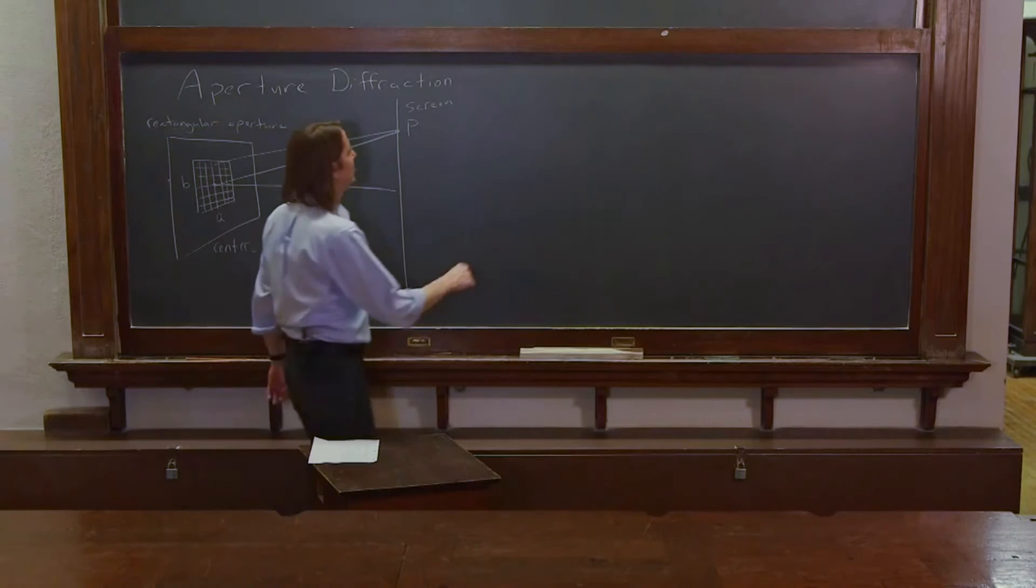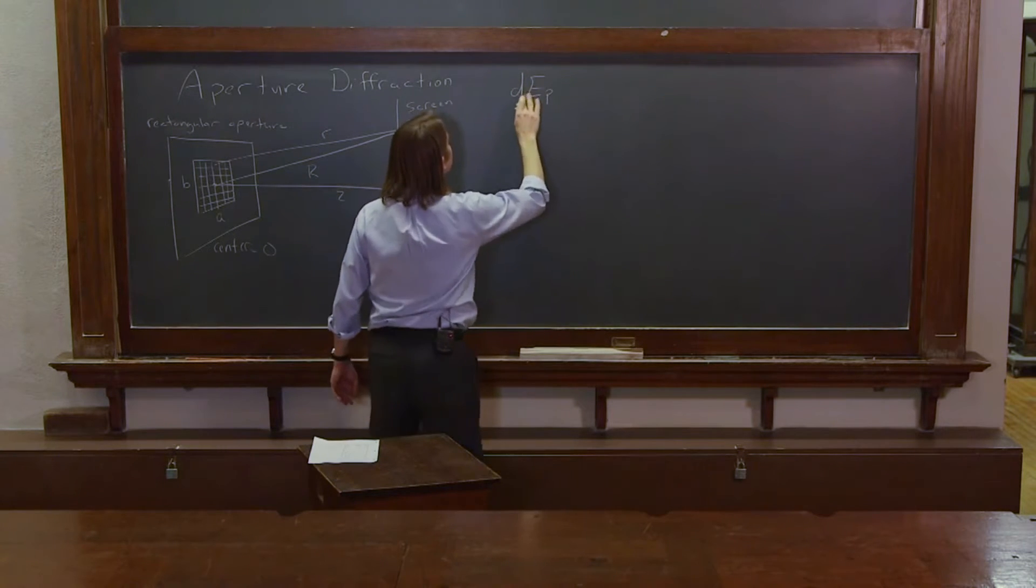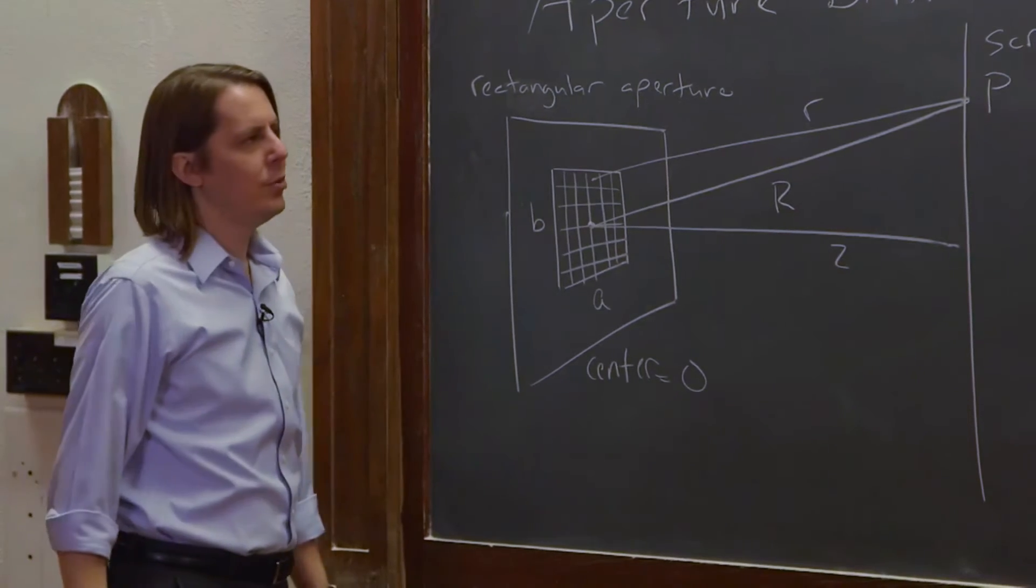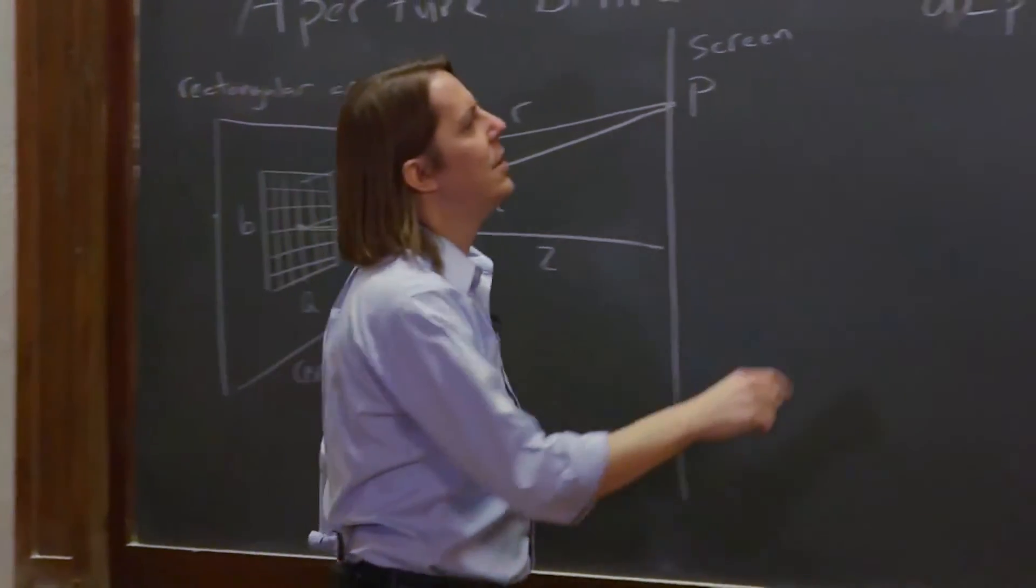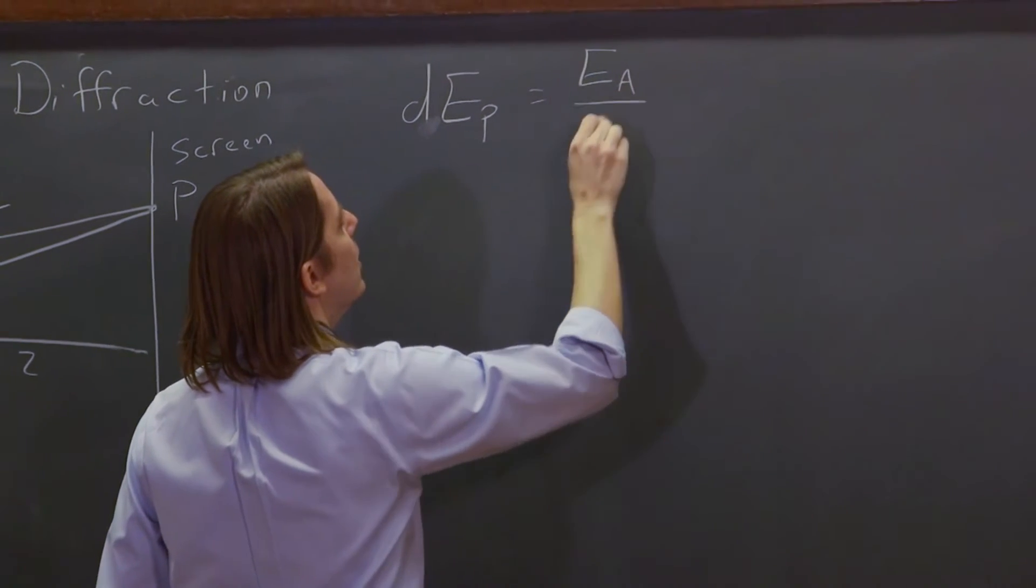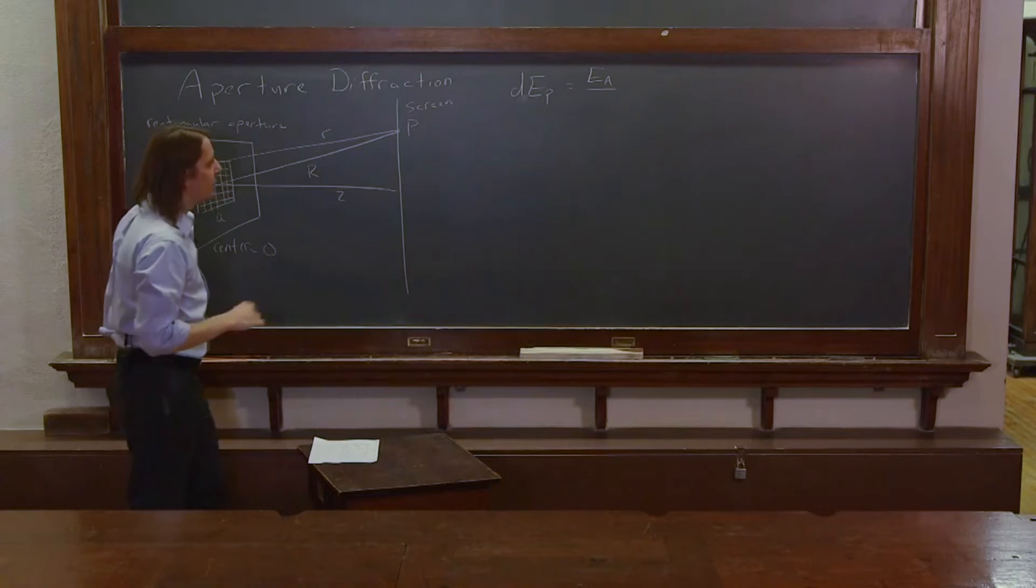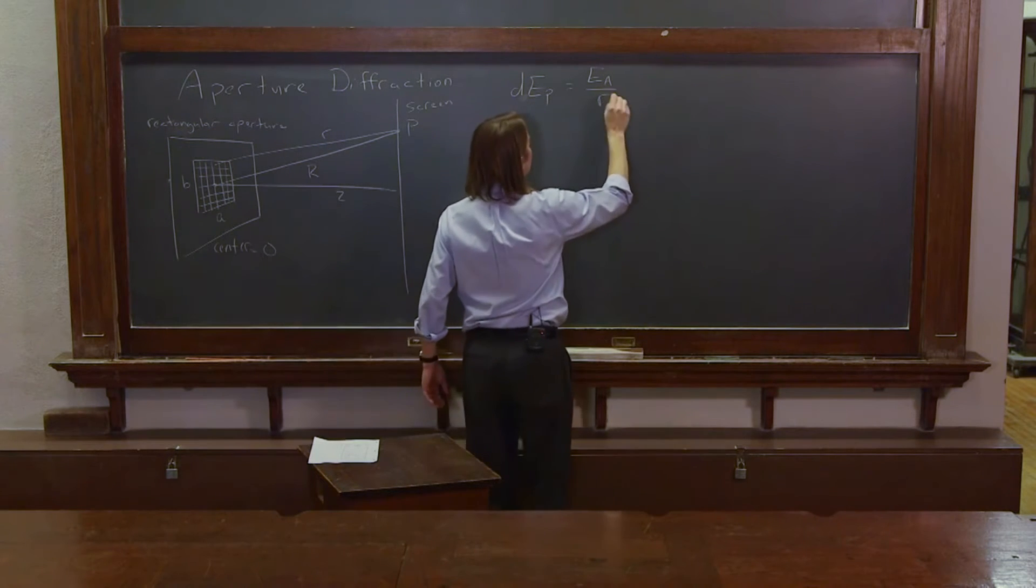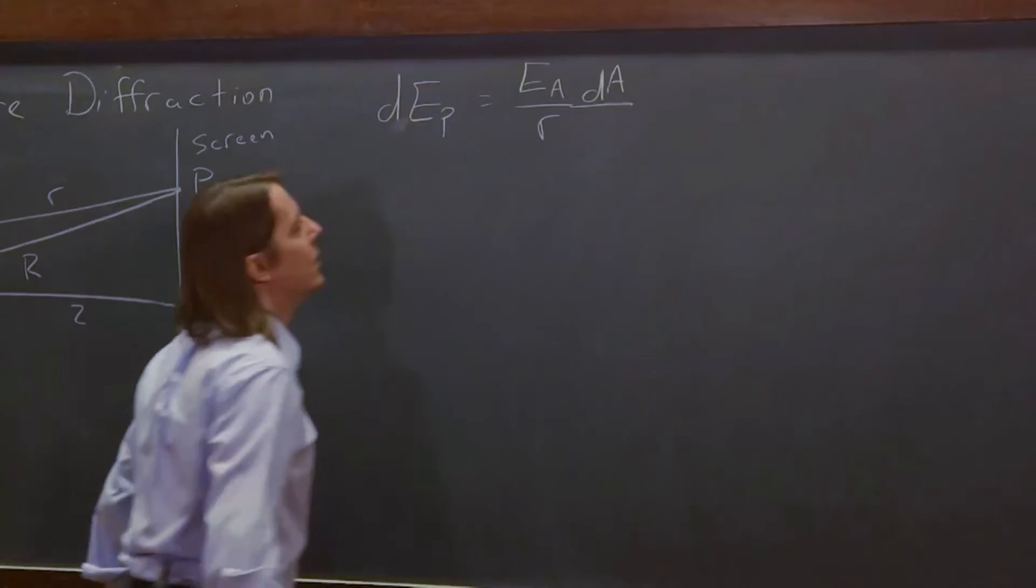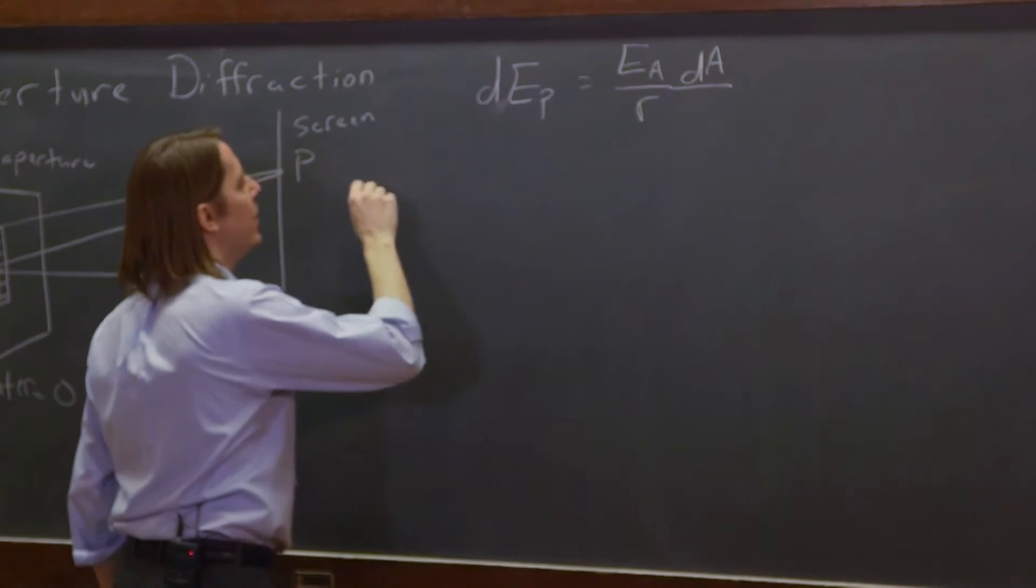So now let's figure out what dEP is going to be. The differential electric field at P, due to each one of these little Huygens wavelets, is going to be Ea, this time, over big R or little r. Let's call it little r. Ea over little r, dA. So maybe you can guess what Ea is. It's the field amplitude per unit area.